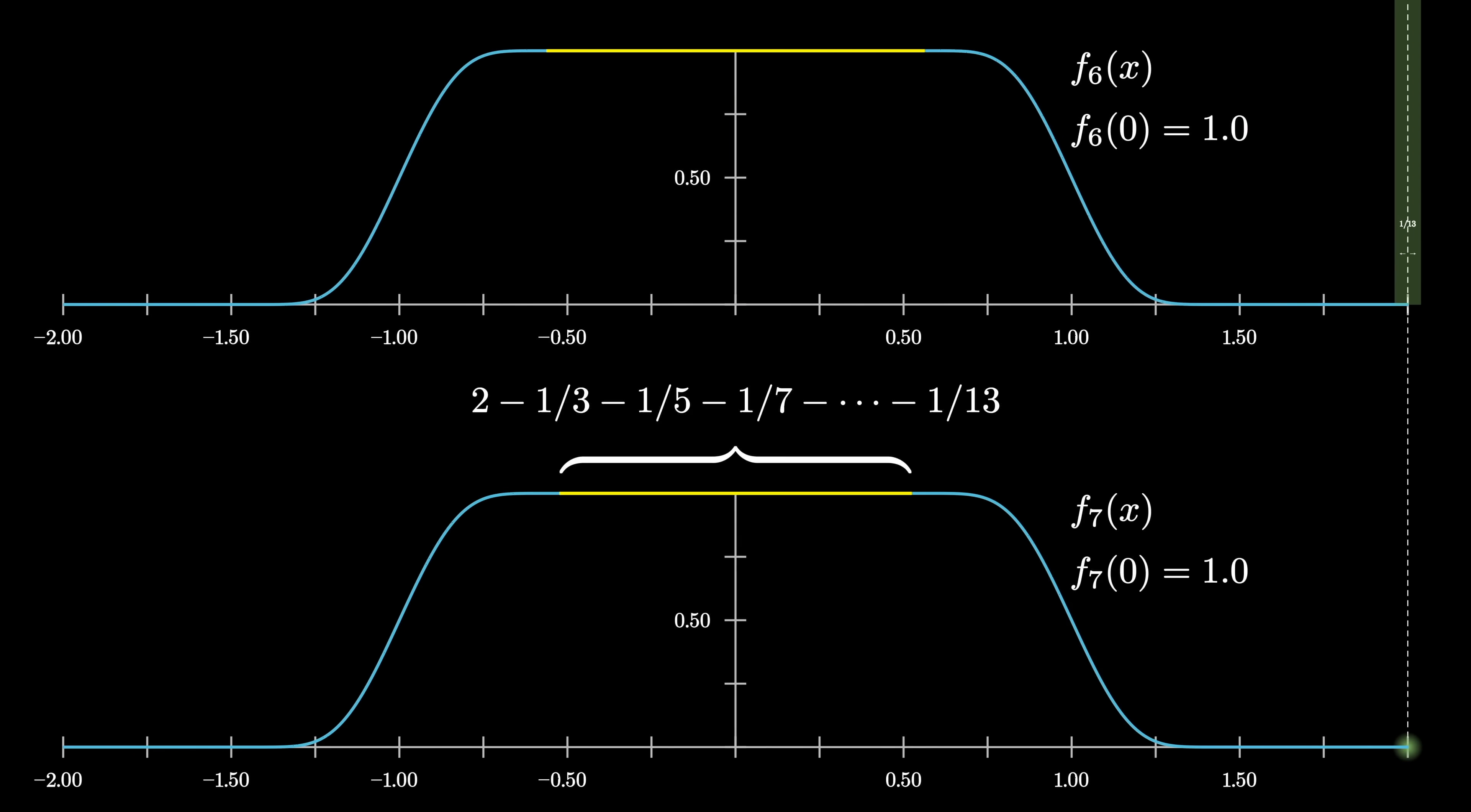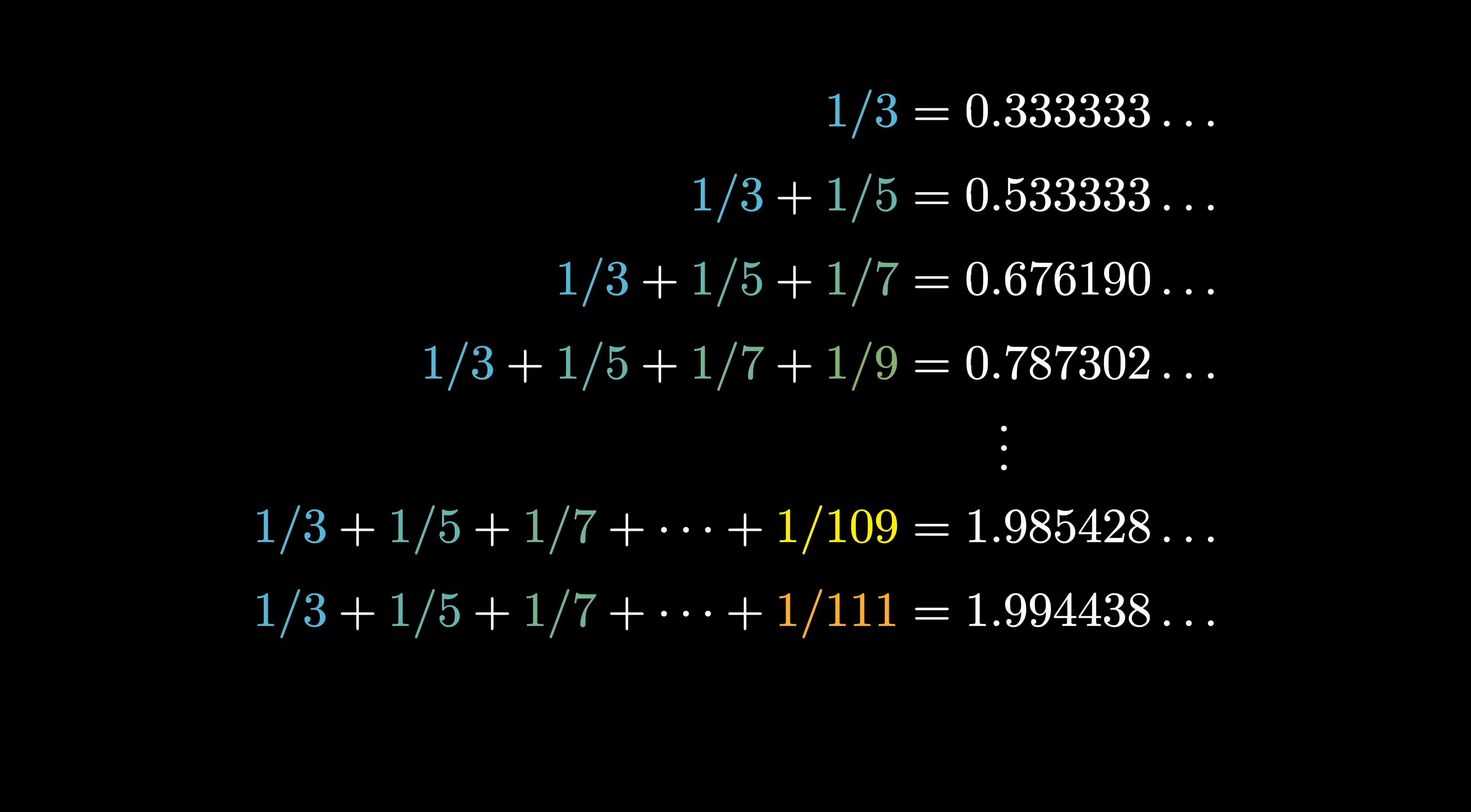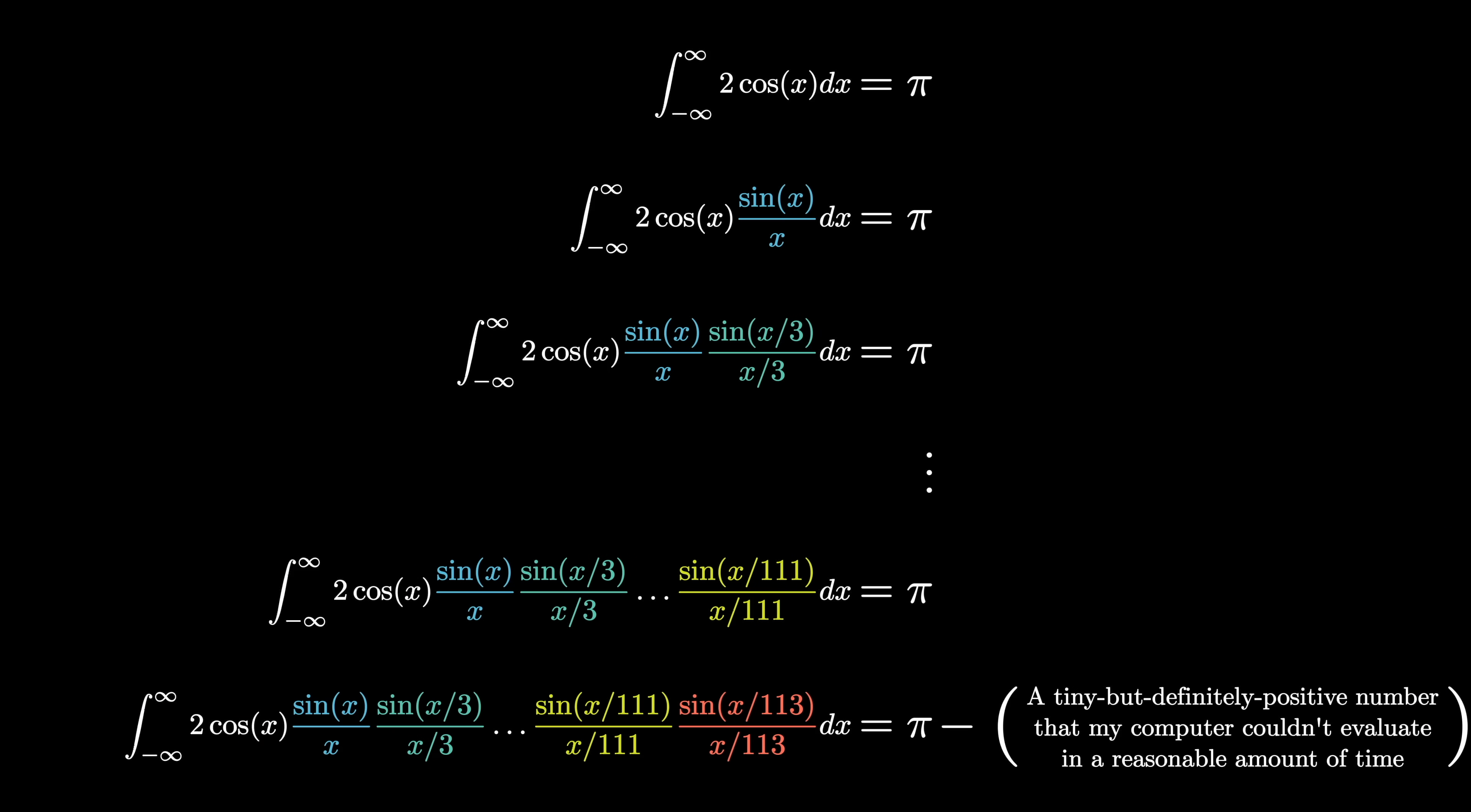So, as you do this repeated moving average process, eating into it with the smaller and smaller windows, it takes a lot longer for them to eat into the whole plateau. More specifically, the relevant computation is to ask how long do you have to add these reciprocals of odd numbers until that sum becomes bigger than 2. And it turns out that you have to go until you hit the number 113, which will correspond to the fact that the integral pattern there continues until you hit 113.